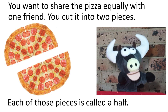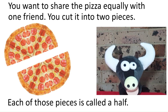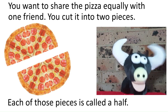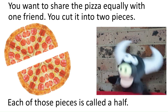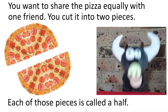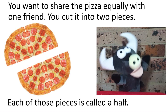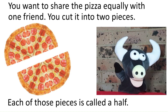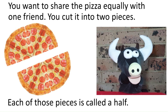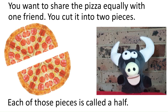You cut the pizza into eight equal pieces, and you would have seven of them, and they would have one. I'm just kidding. You know how it works. You would cut the pizza equally into two pieces. Each piece is called a half.